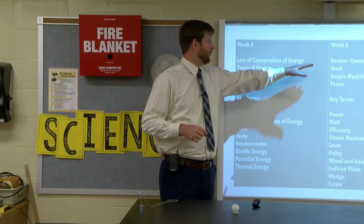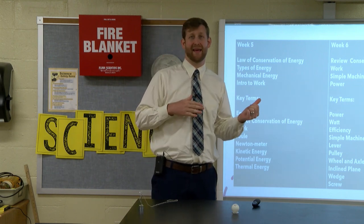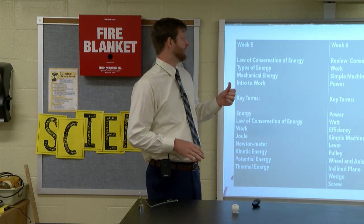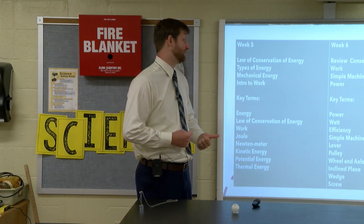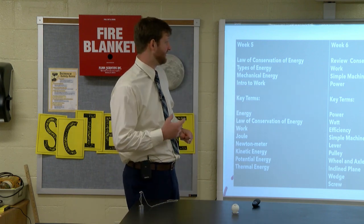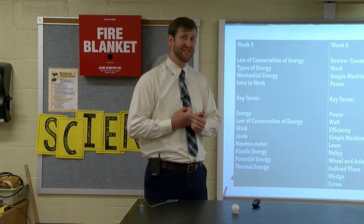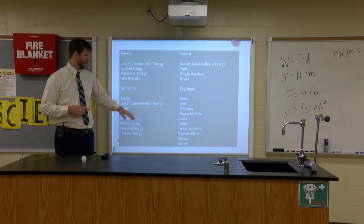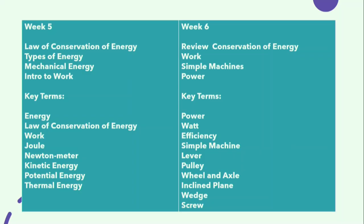Today we're going to talk about work a little bit more, simple machines, and power. Today's terms — go ahead and jot these down — are: power, watt, efficiency, simple machine, and then our six simple machines: lever, pulley, wheel and axle, incline plane, wedge, and screw.